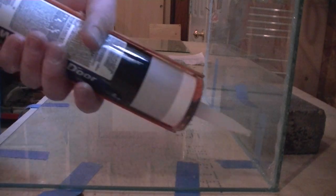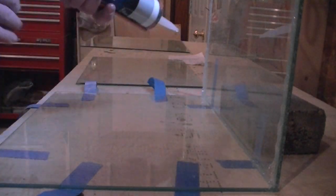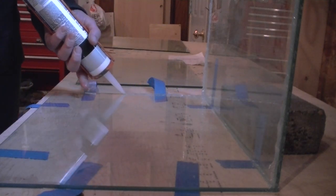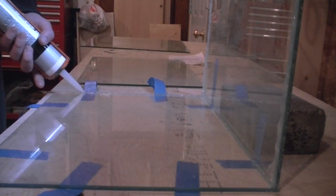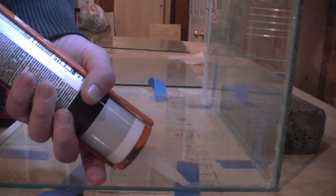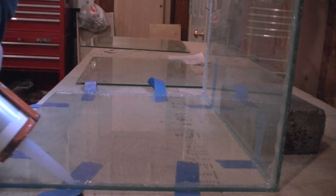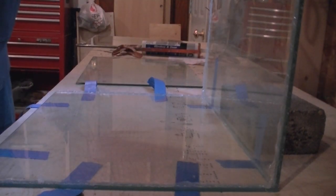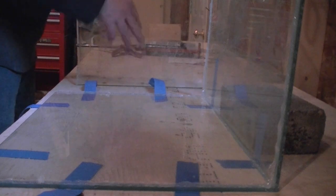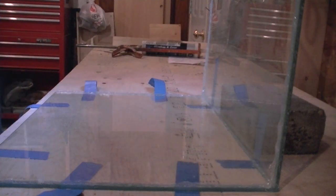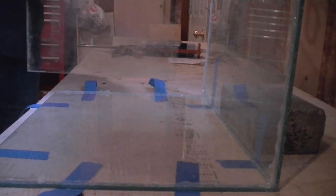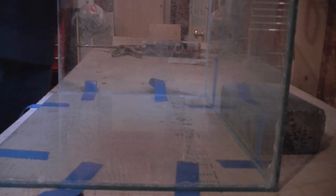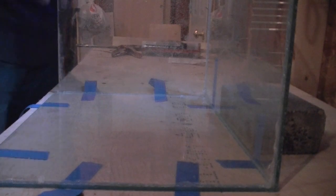What you want to do is you want to put a bead on the bottom for your side panels. Make a nice even square corner.